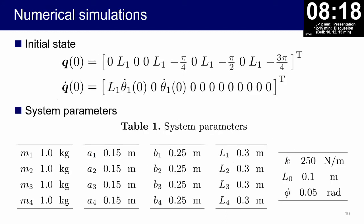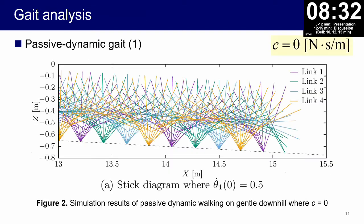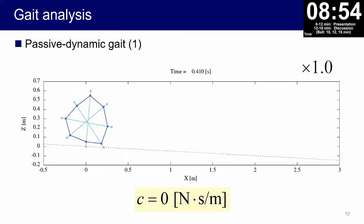Numerical simulations: we set initial state and system parameters chosen as the values listed in table one. Gait analysis: Figure 2a shows the stick diagram of the generated passive dynamic walking on a gentle downhill with an inclination angle of 0.05 radians. In this case, the walker does not utilize the damping effect, elasticity only.